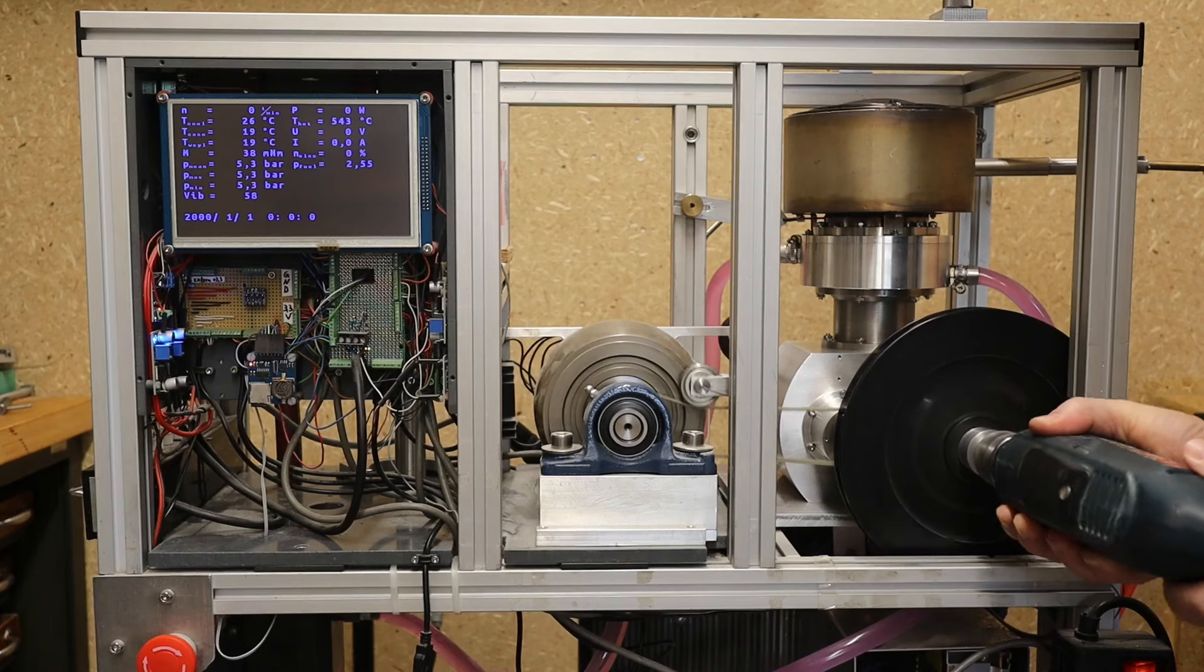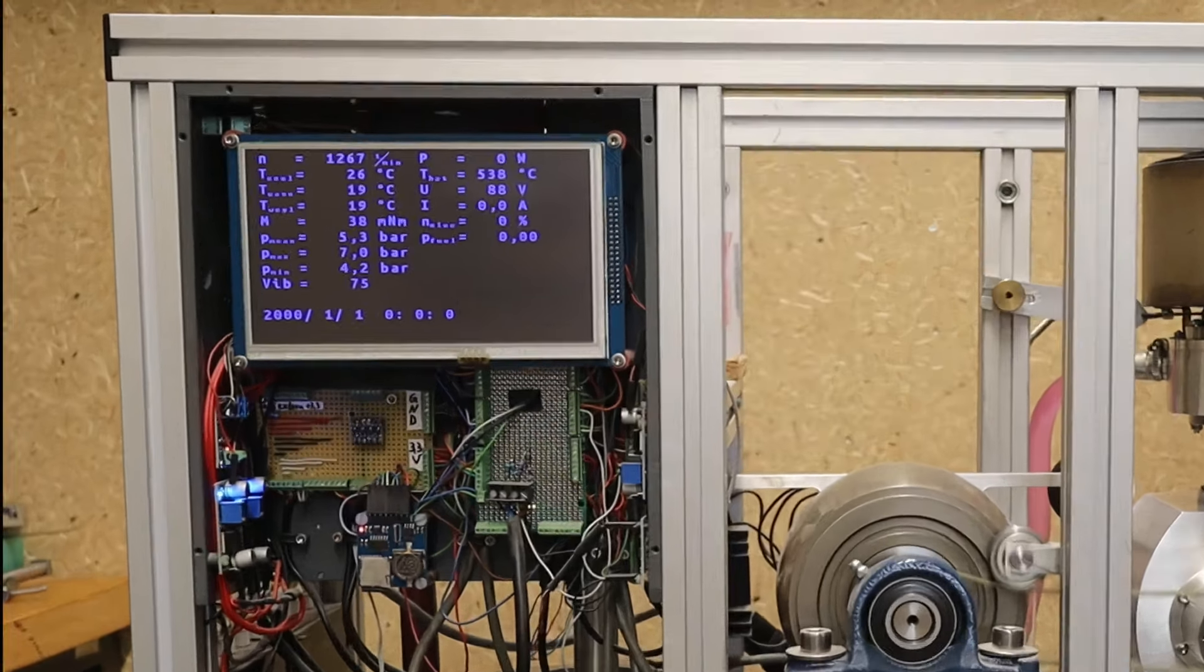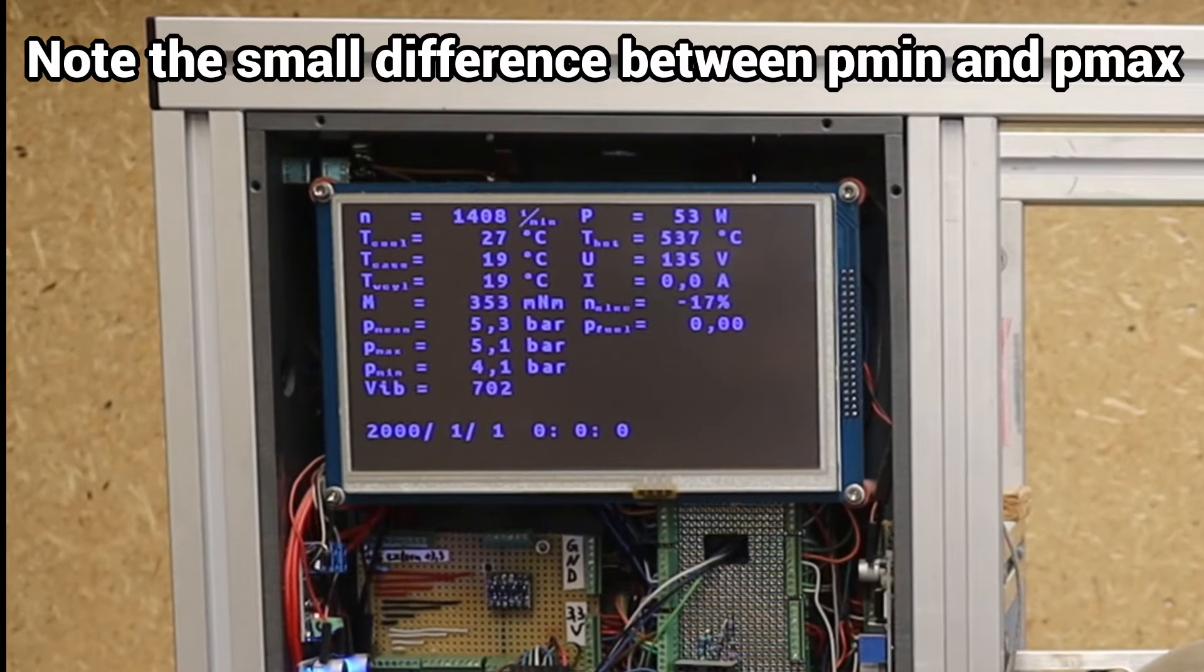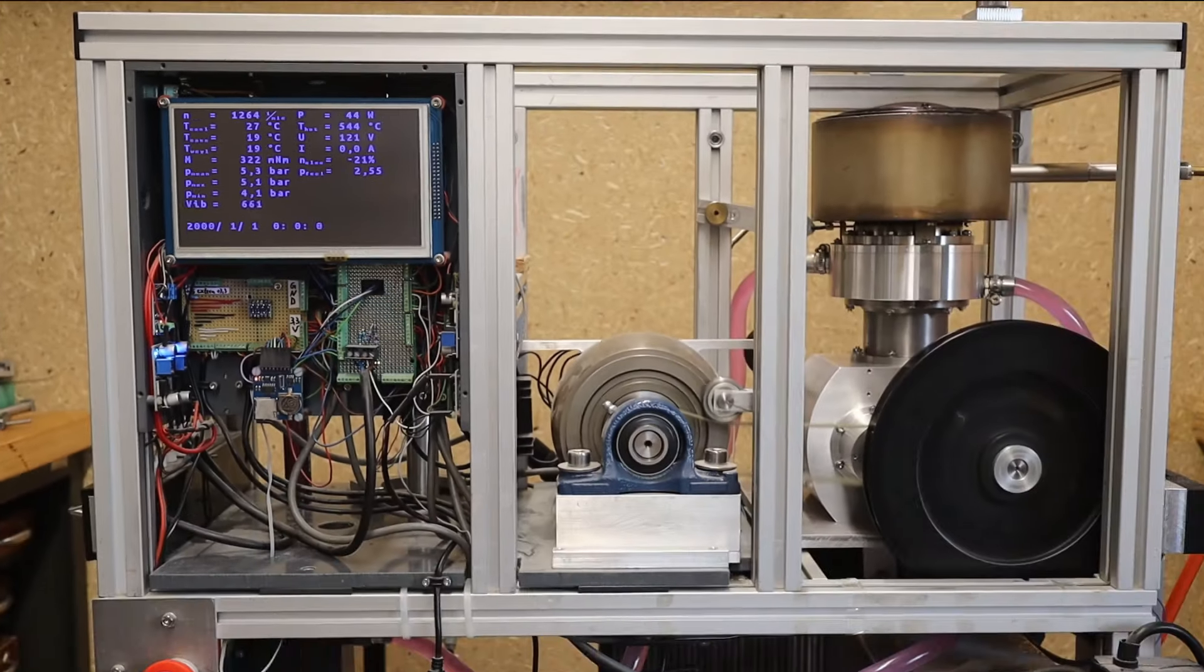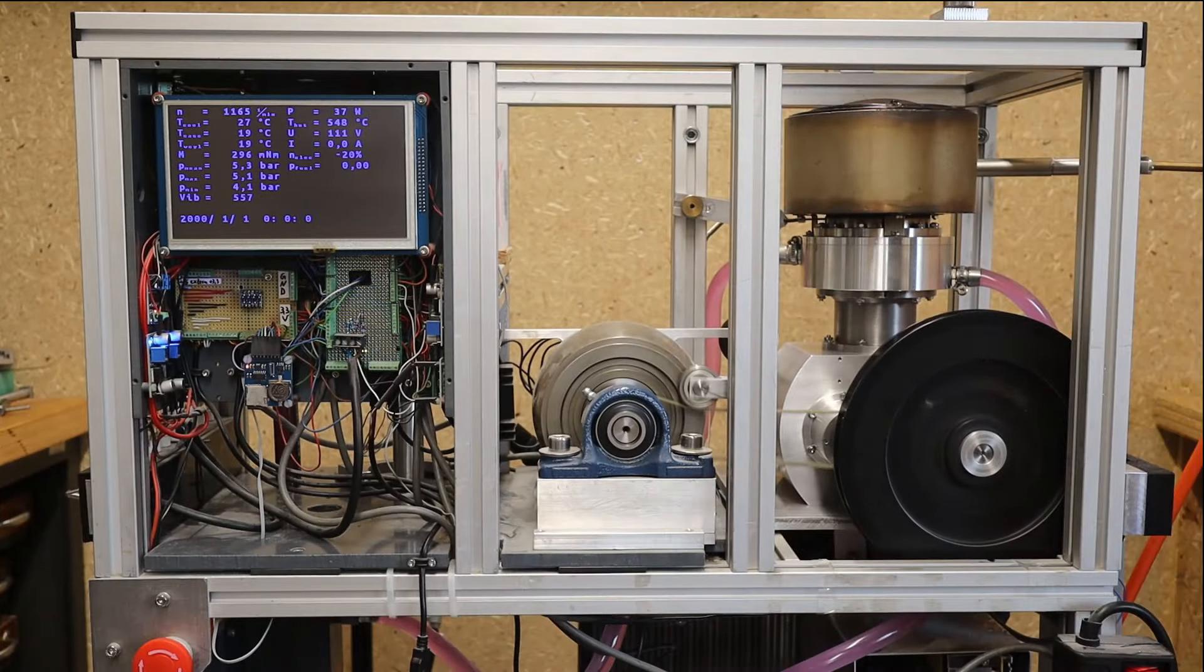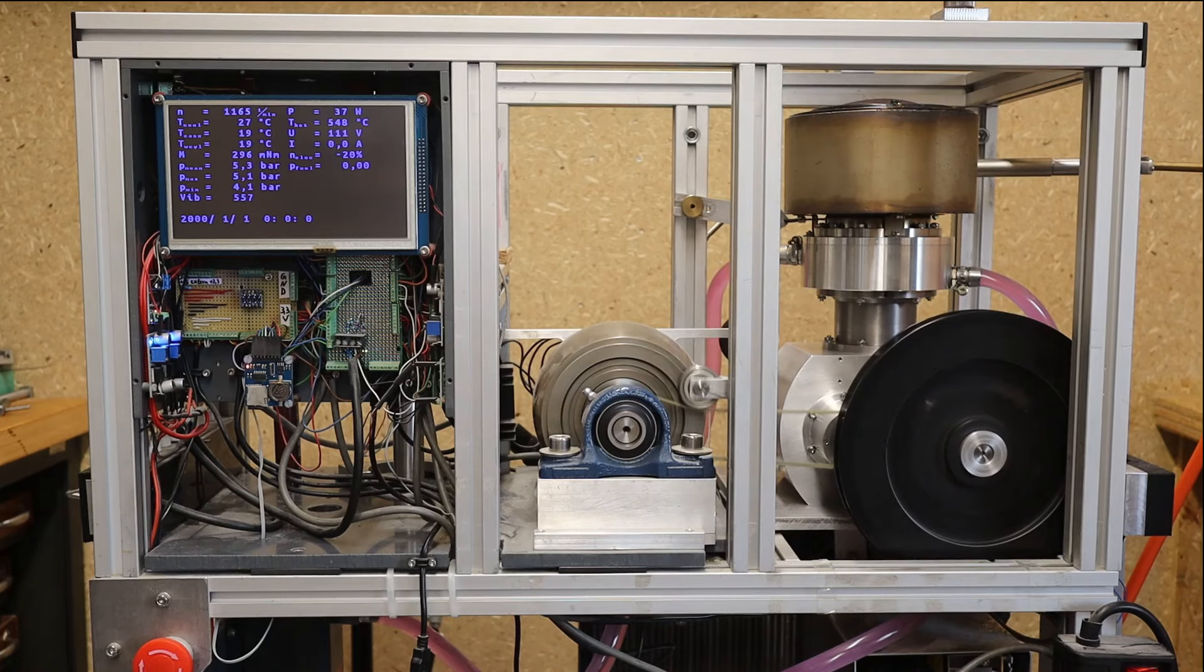With a larger piston clearance and unchanged piston rings, the compression is significantly worse. Despite the lower friction, the power output is also significantly lower than before.